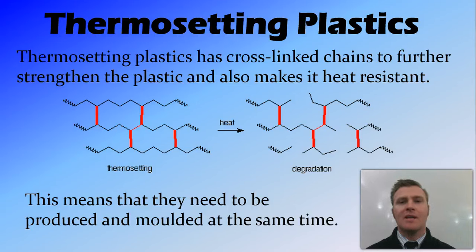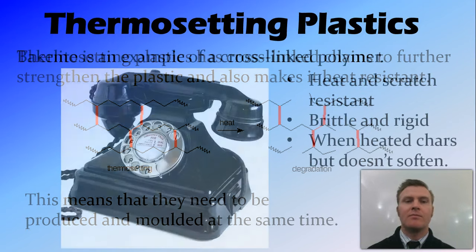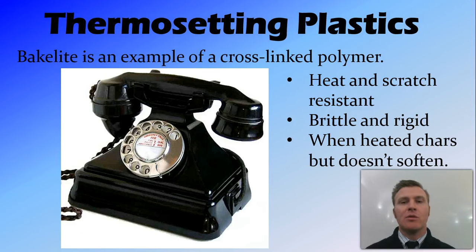Thermosetting plastics have crosslinks between the different polymer chains, which makes them heat resistant — heating them does not make them melt. This means they must be produced and molded at the same time, because once set they cannot be remolded. An example is bakelite, which is heat and scratch resistant and more durable than thermoplastics, but it is also brittle and rigid. When heated, rather than melting it chars.